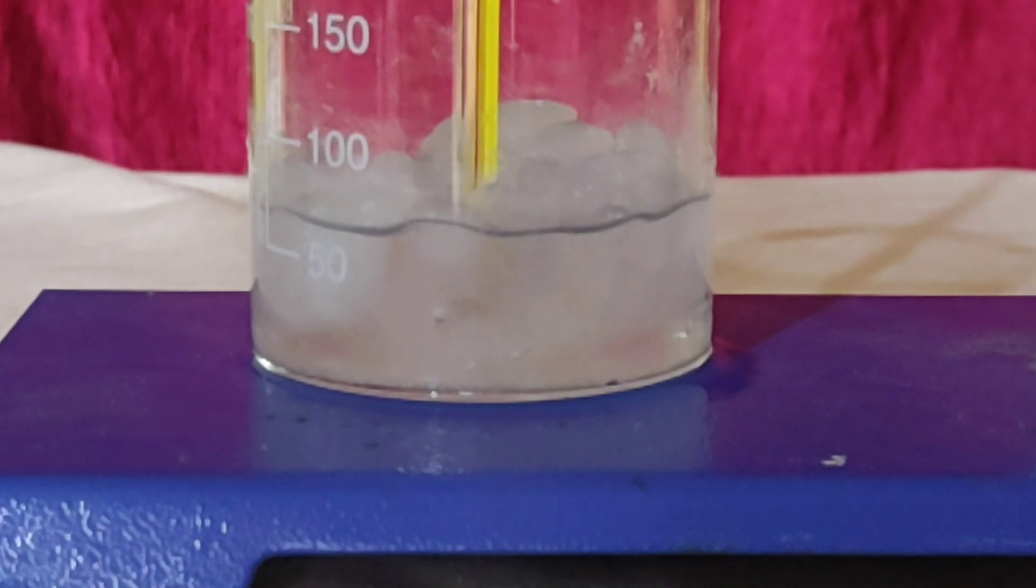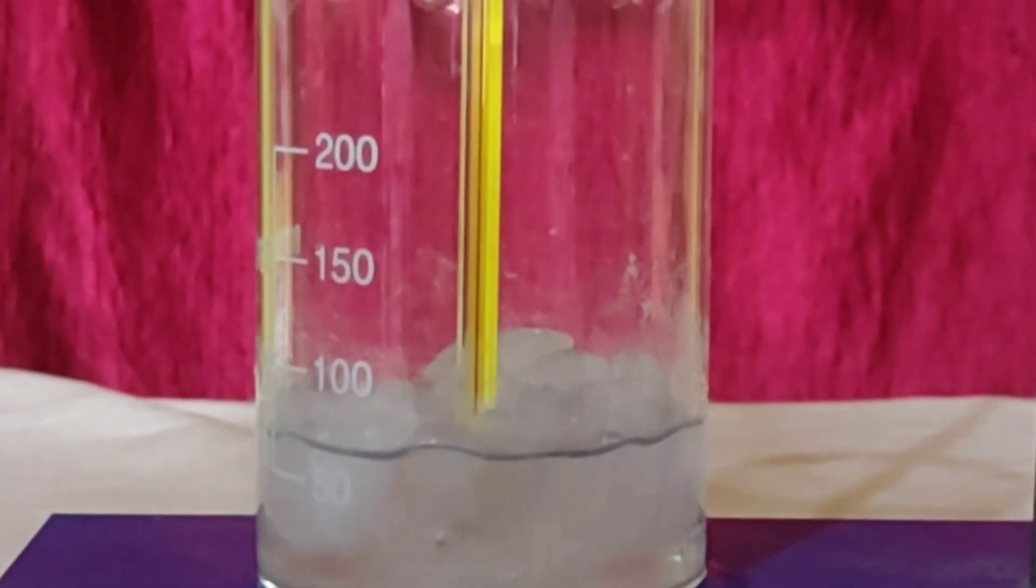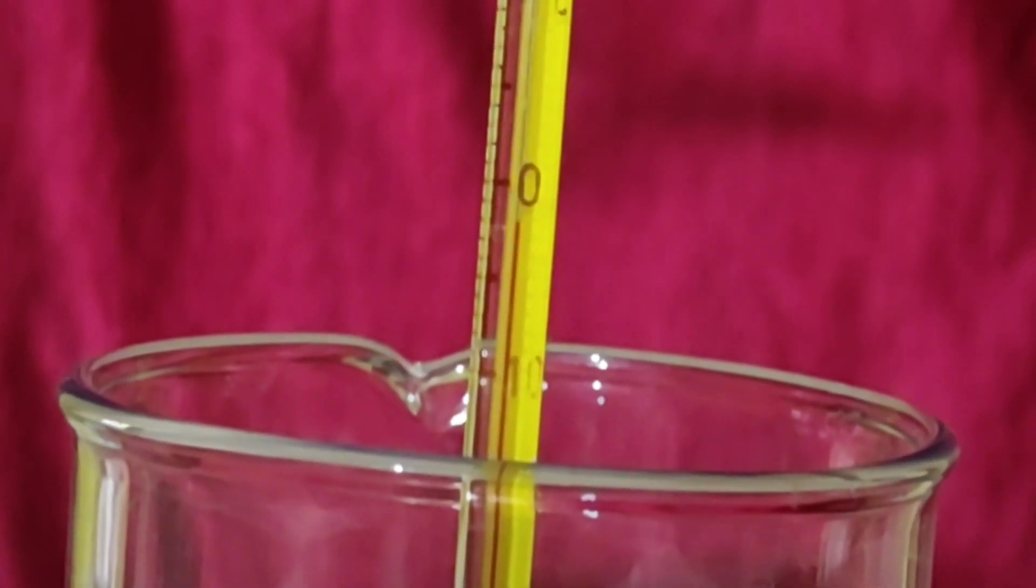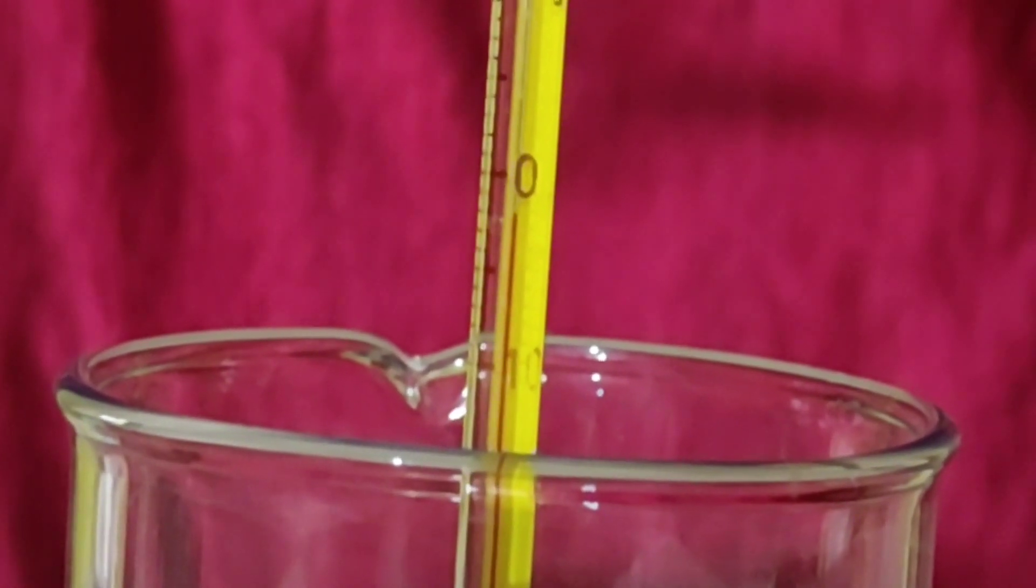Let the bulb of the thermometer remain in the mixture of ice and water for some more time, and keep recording the temperature. Do you observe any further change in temperature? No. So, what have you learnt from this experiment? The melting point of ice remains constant during the melting of ice.